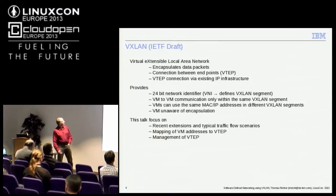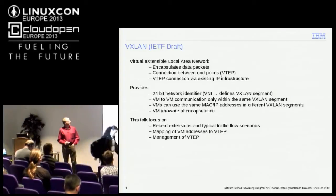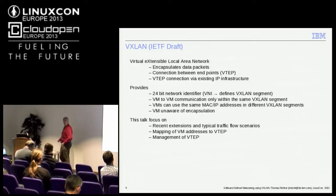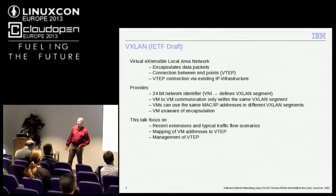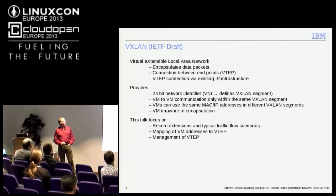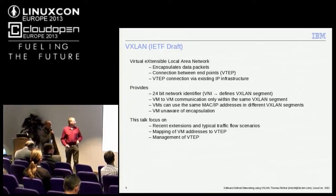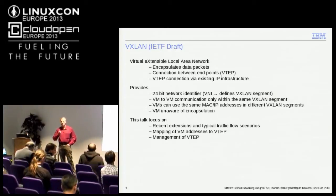VXLAN stands for Virtual Extensible Local Area Network. It basically operates by encapsulating data — data leaving the machine is encapsulated, distributed, and sent over the internet. The participating hosts are called virtual tunnel endpoints, and they are interconnected using standard IP infrastructure. VXLAN provides a 24-bit network identifier prepended to every packet leaving a VXLAN device driver. This defines what we call a VXLAN segment — a virtual machine can only communicate with another virtual machine if they are in the same VXLAN segment. Different VXLAN segments can use the same IP and MAC addresses. Importantly, virtual machines are unaware of the encapsulation, so there's no need to change anything in the software stack.